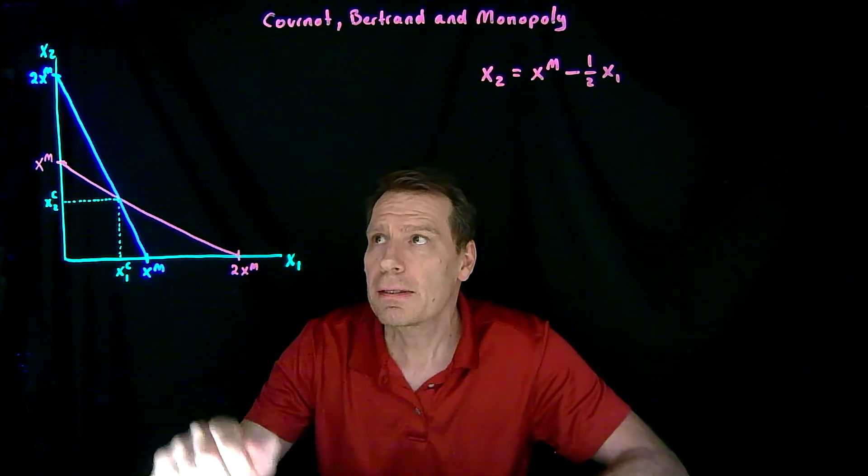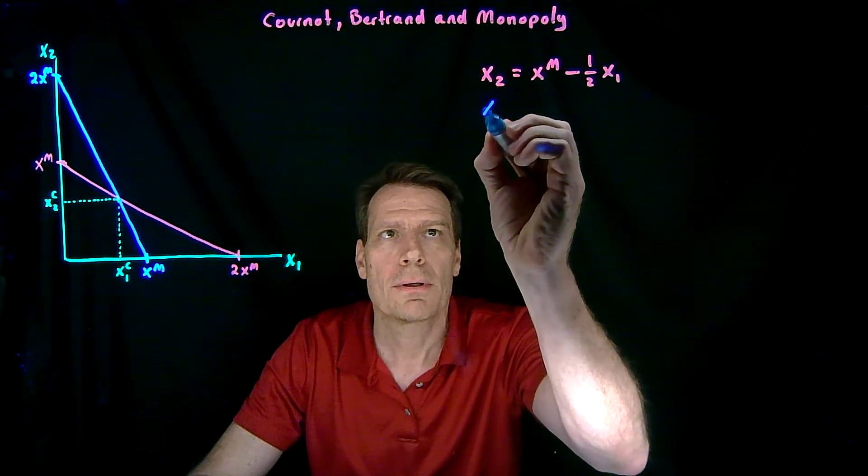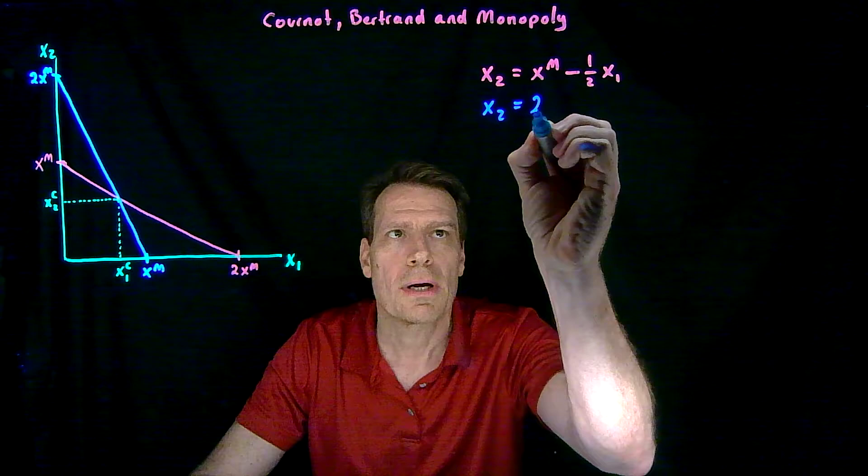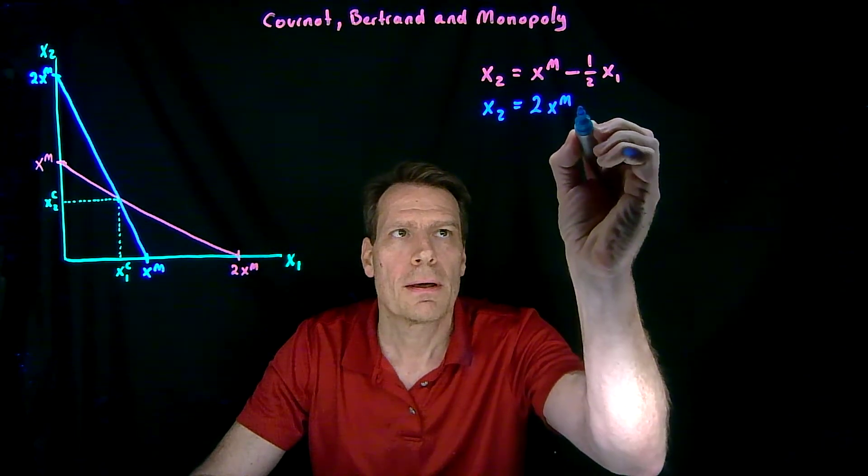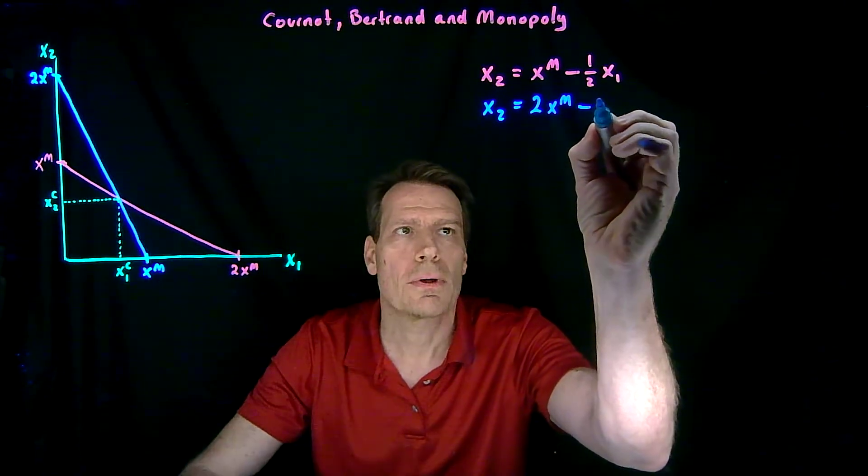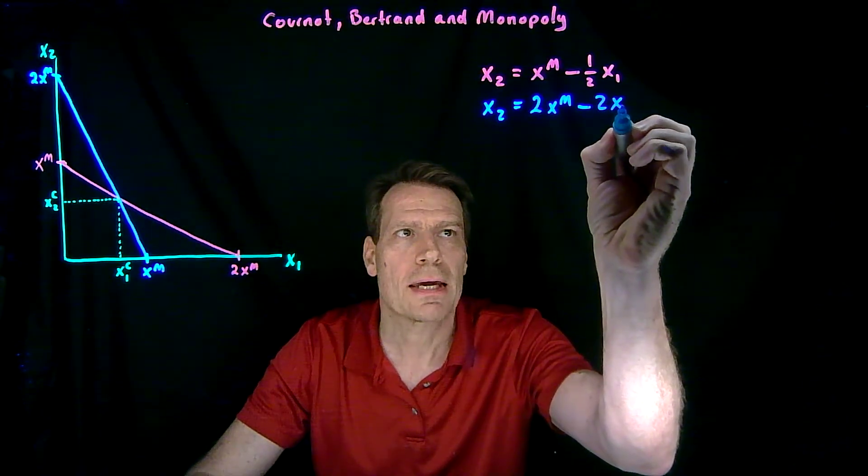And the blue line has an intercept of 2xm, so x2 is equal to 2xm, minus a slope of minus 2, times x1.